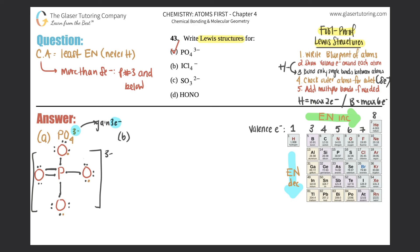Now moving on to B: ICl₄⁻, so it's a minus one, meaning we gain one electron. Between iodine and chlorine, iodine is the least electronegative, so iodine goes in the middle surrounded by four chlorines. Iodine and chlorine both have seven valence electrons, so I'll draw seven around each one.